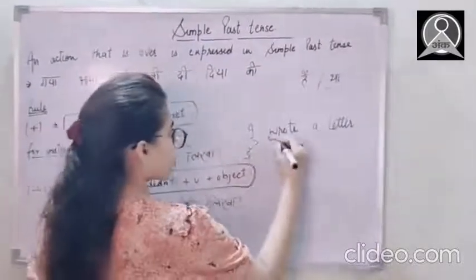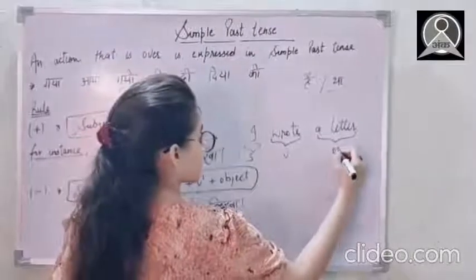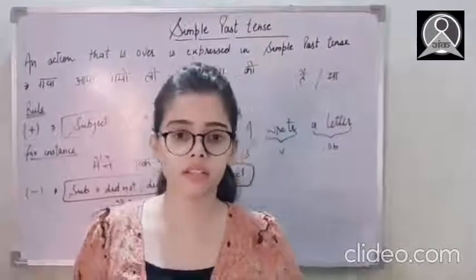I wrote a letter. I, for the subject, wrote for the verb second form. A letter is the objective part. So always, always, always, always compare your sentence with the rule while translating the sentences.